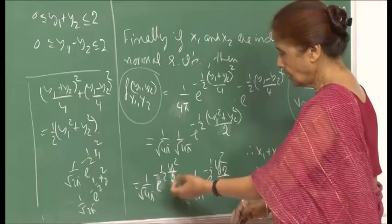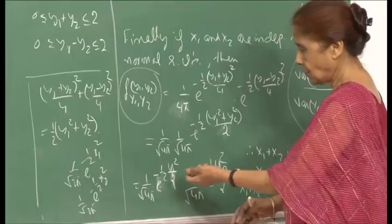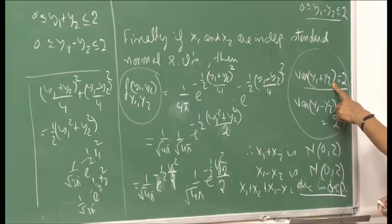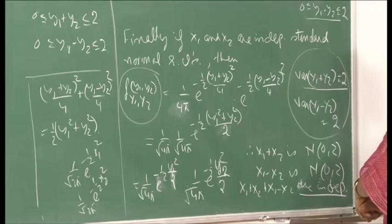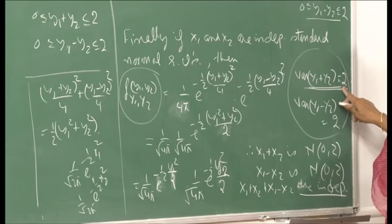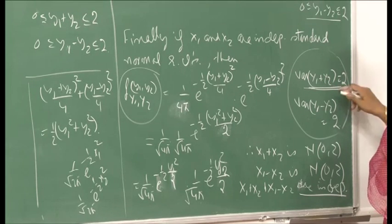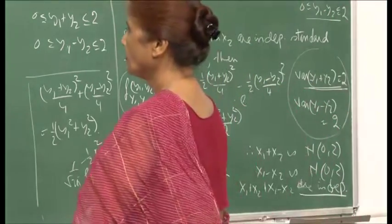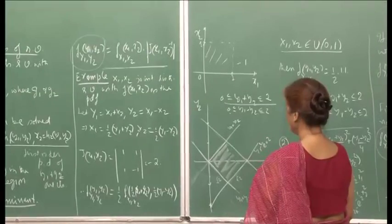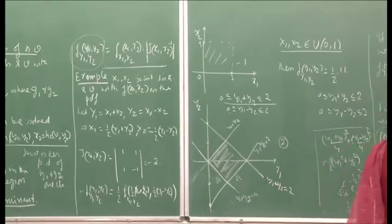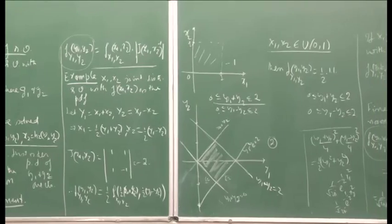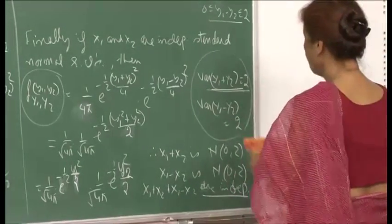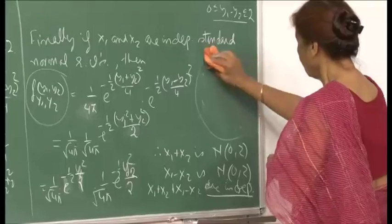The PDF separates out into two single-variable PDFs, so I conclude that Y₁ and Y₂ are independent. There was an earlier incorrect statement about variance — let me correct: since X₁ and X₂ are independent, the variance of X₁+X₂ is 2, and the variance of X₁-X₂ is also 2, because variance of X₁ is 1 and variance of X₂ is 1.